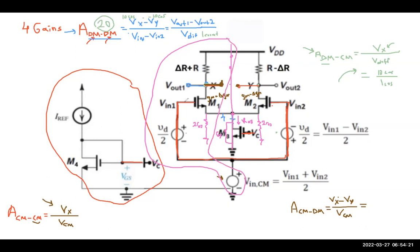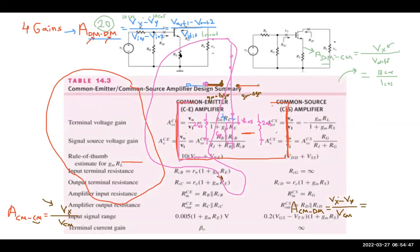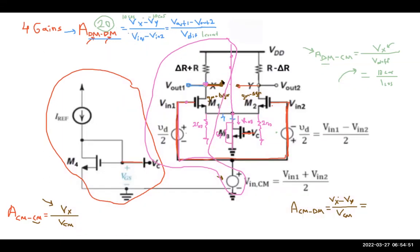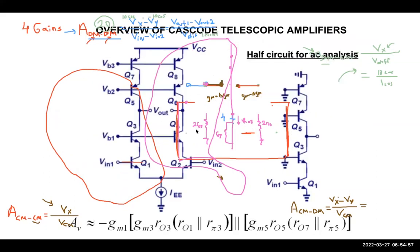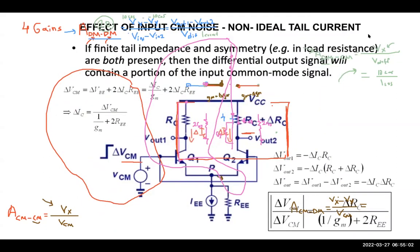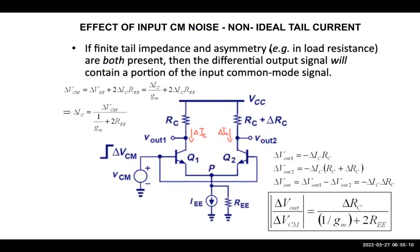In the common-mode half circuit, the input is VCM and the output is Vx. This is equivalent to the single-stage amplifier with a degeneration impedance at the source/emitter. You now know how to solve a circuit with an output impedance and a degeneration impedance from the earlier single-stage amplifier analysis.